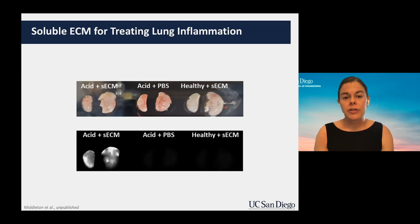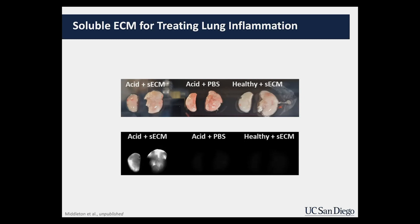We've tested a couple of animal models of lung inflammation. Lung inflammation is one of the major issues with COVID-19 — excessive inflammation leading to death. In an acid model, we deliver acid to the lungs in a rodent to create inflammation, then deliver our soluble extracellular matrix via intravenous injection. Fluorescently tagged material lights up the lungs. If you deliver just saline you see no signal, and if you deliver soluble ECM in a healthy animal you see nothing — it only targets areas of inflammation.